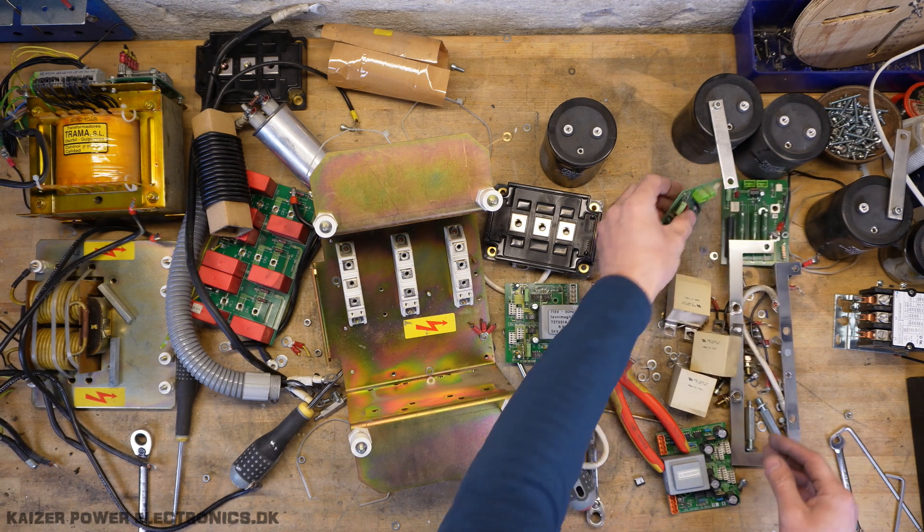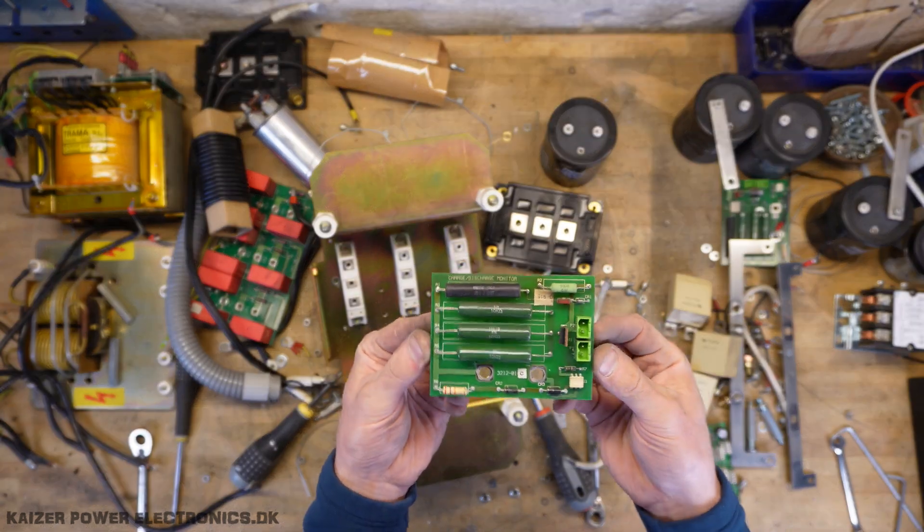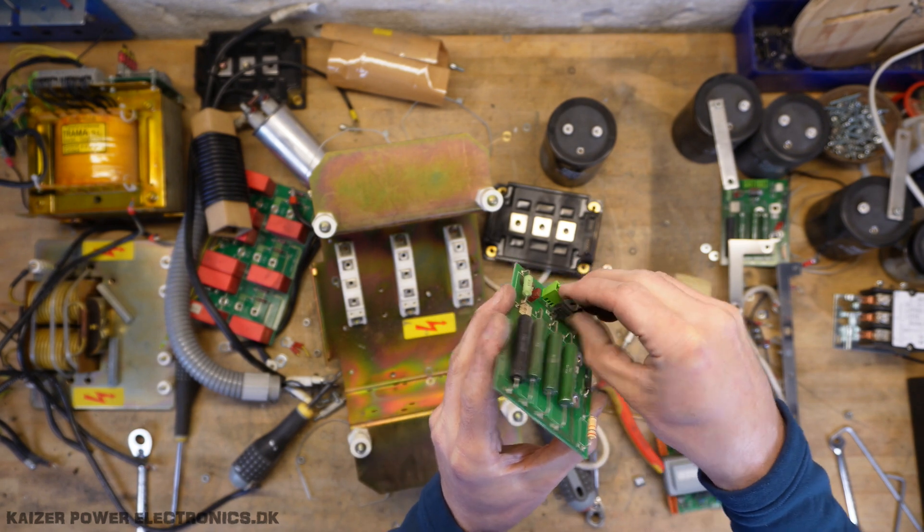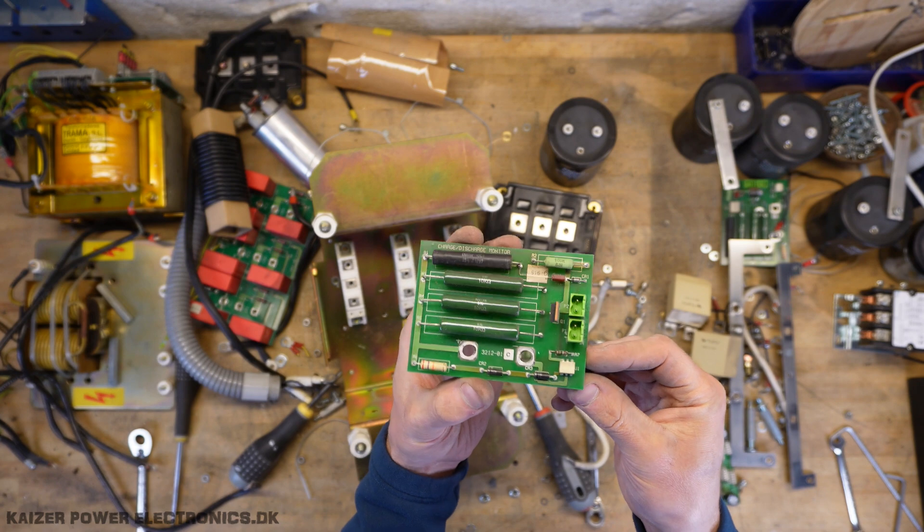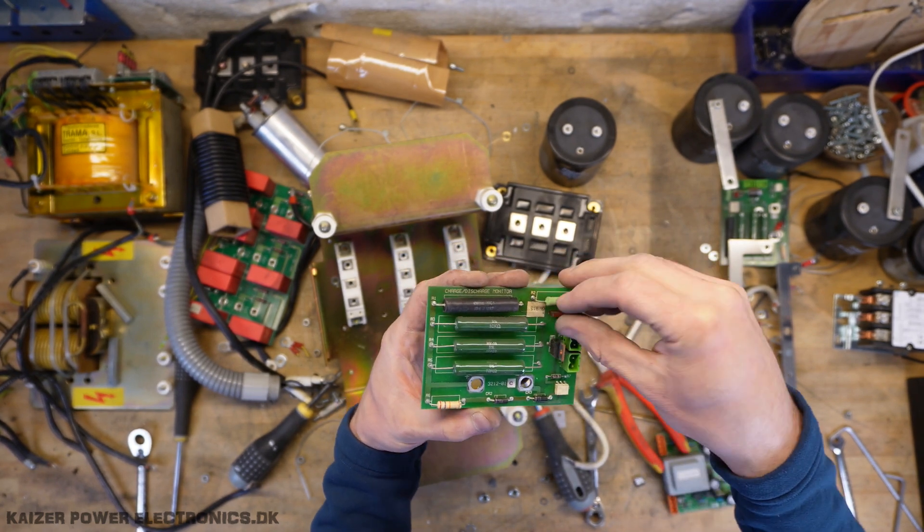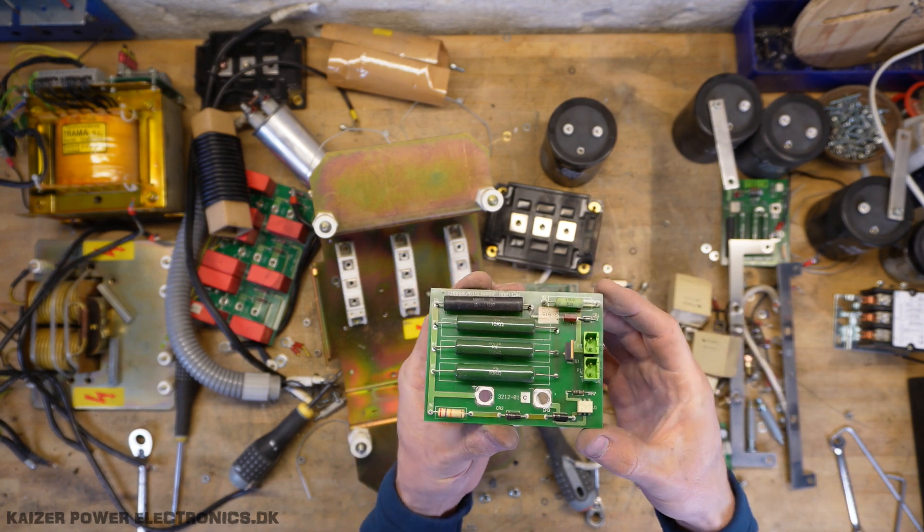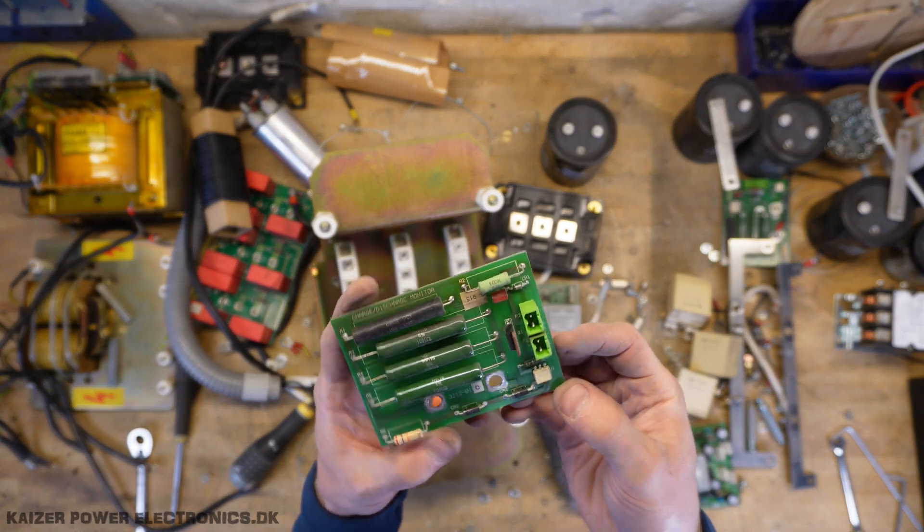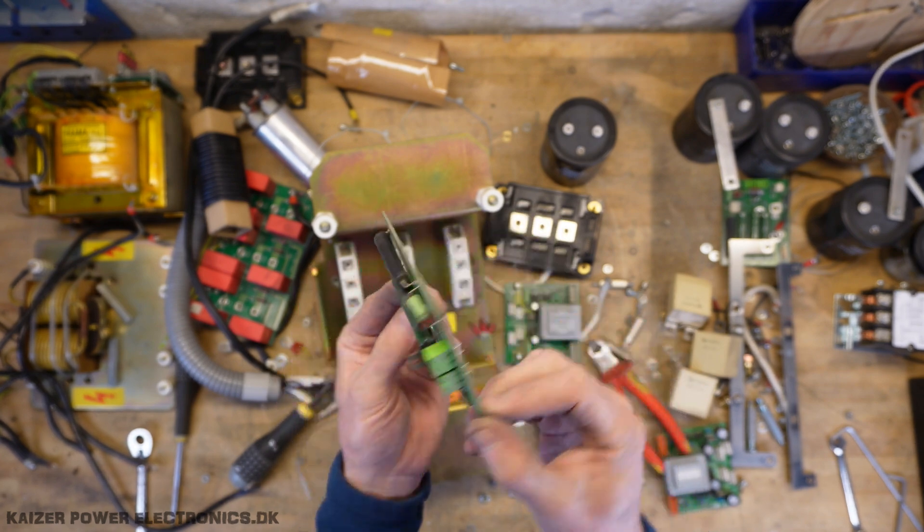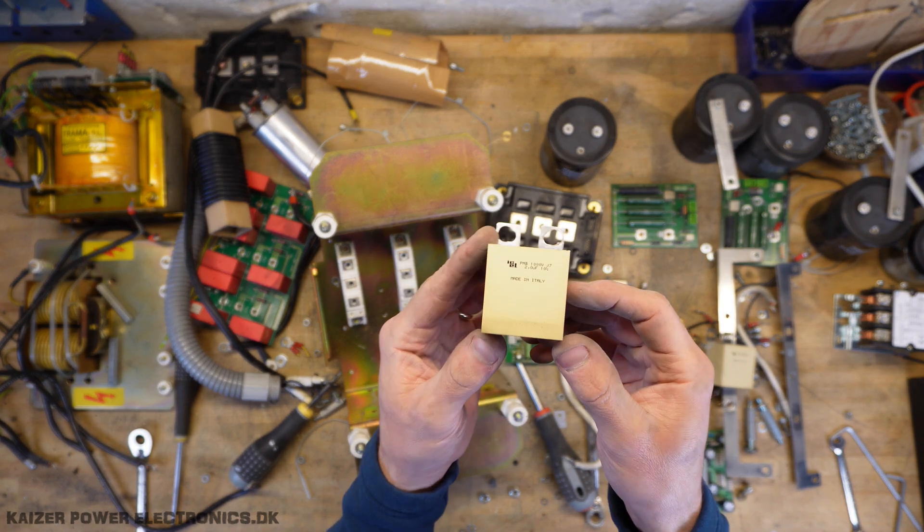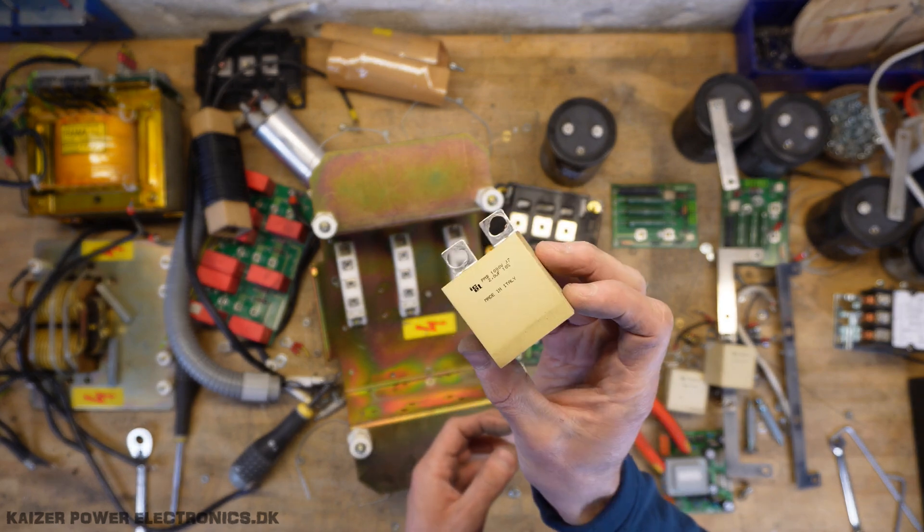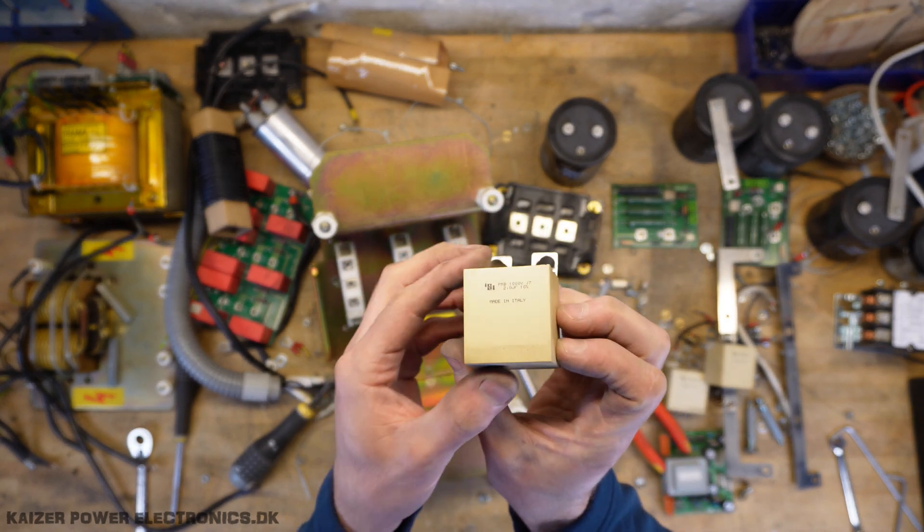And we have the charge and discharge monitor. So it seems to have an IRF 840 MOSFET, an isolator, a LED for indication of high voltage presence on the DC bus. So very nice little board that can be reused just as is. DC bus also has these nice PME 1000 volt two microfarad snubber capacitors. Always a use for those.